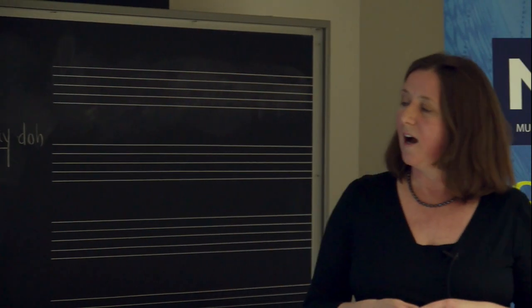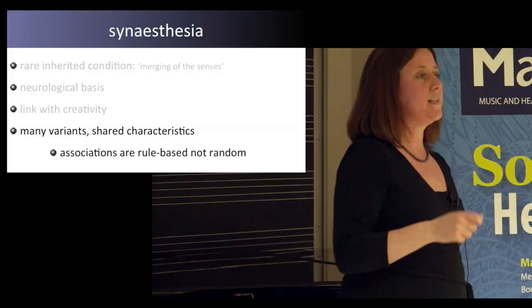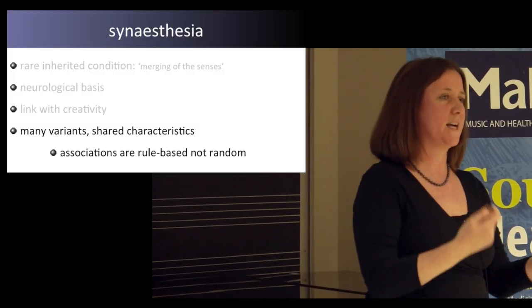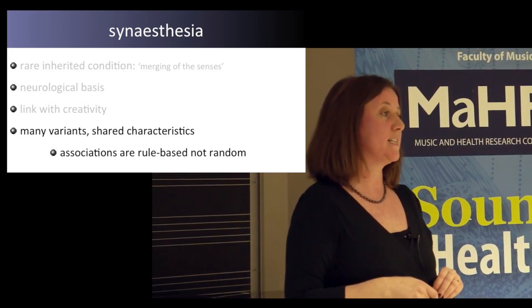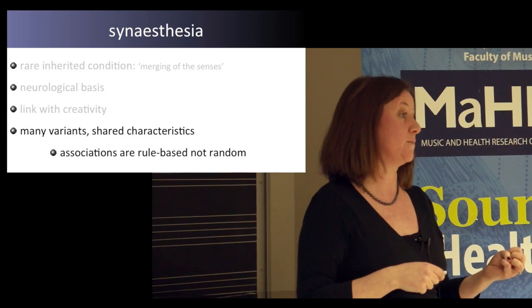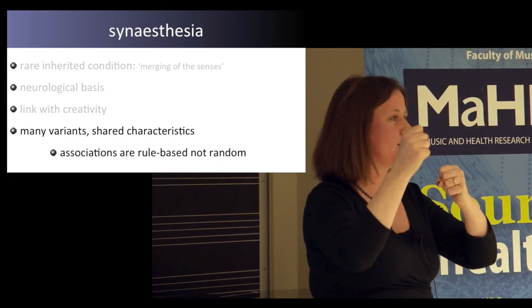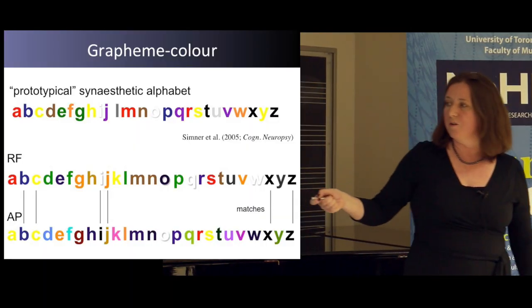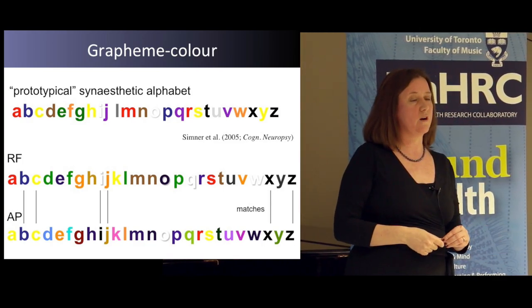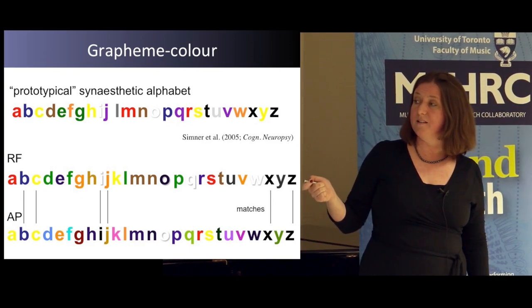I'm going to spend the majority of this talk looking at different variants of synesthesia and telling you that although the variants can differ, they share characteristics. In particular, I want to persuade you that the associations for synesthetes — for example, a letter to a colour — are not random. Synesthetes are using quite sophisticated rule systems to work out what kind of sound goes with what colour, or what taste goes with what shape. They don't know this at a conscious level, but if you look carefully you can find all these rules operating.